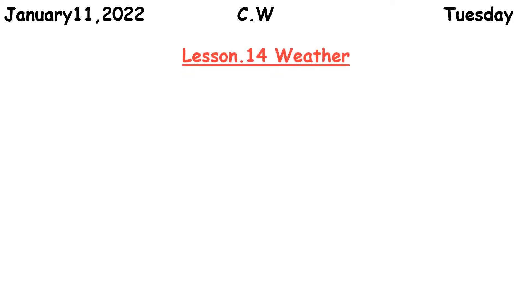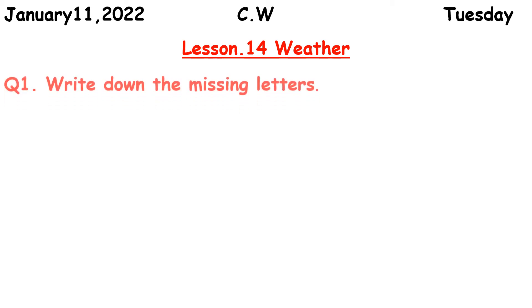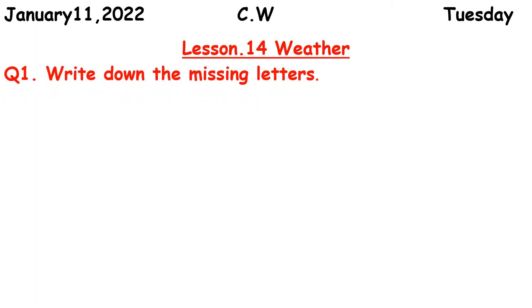Lesson number 14, Weather. Question number one: write down the missing letters. A is 'ripen.' B is 'shower.' Underline the missing letters.